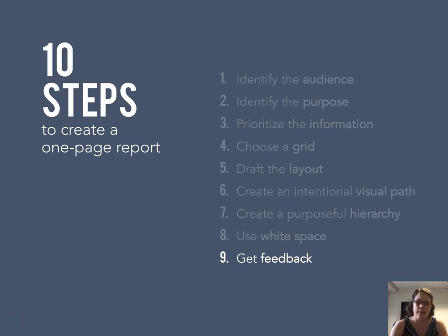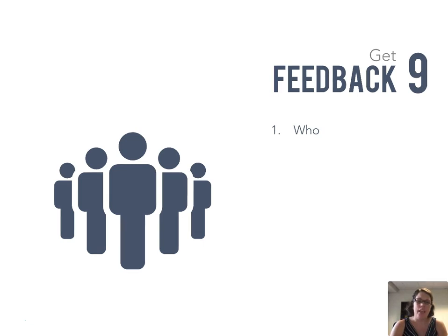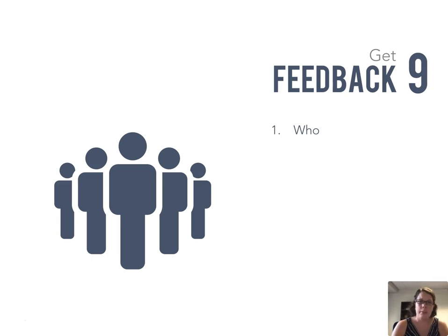The second-to-last step is to get feedback. When thinking about getting feedback on your one-page report, we really want to think about who might be a good person to get feedback from. If you're co-creating a one-page report, your co-author — if they're not involved in the first few steps of drafting the layout — would be a great person to turn to first. That person will be able to give you a critical eye and help you identify issues where it may not be working.